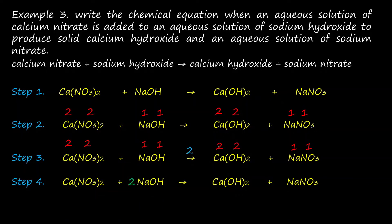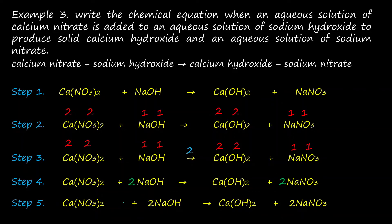For calcium hydroxide: 2 divided by 2 equals 1 — no need to write 1. For sodium nitrate, the total valence for sodium is 1 and nitrate is 1, so 2 divided by 1 equals 2 — write coefficient 2 for sodium nitrate. The fifth step is to check the equation is balanced: 1 calcium on the reactant side and 1 calcium on the product side; 2 nitrate on the reactant side and 2 nitrate on the product side; 2 sodium on each side; 2 hydroxide ions on the reactant side and 2 on the product side. The chemical equation is balanced.